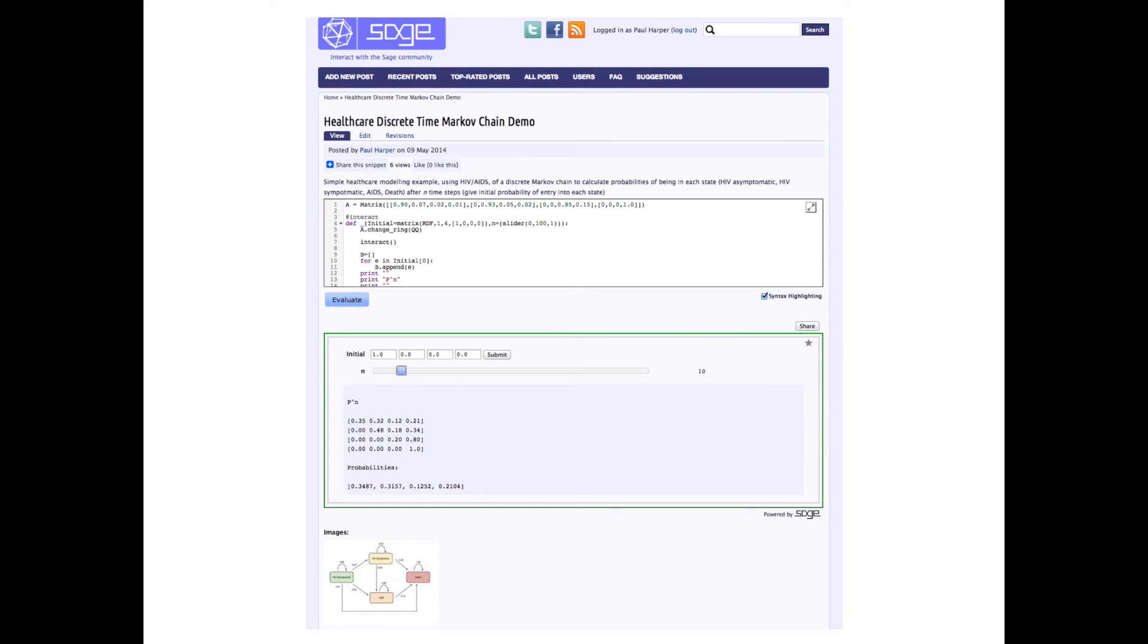I have put together some SAGE mathematical software system code to demonstrate this, which allows you to change the initial distribution and the time step n, and to look at the corresponding values of the probabilities of being in each state after n time increments.